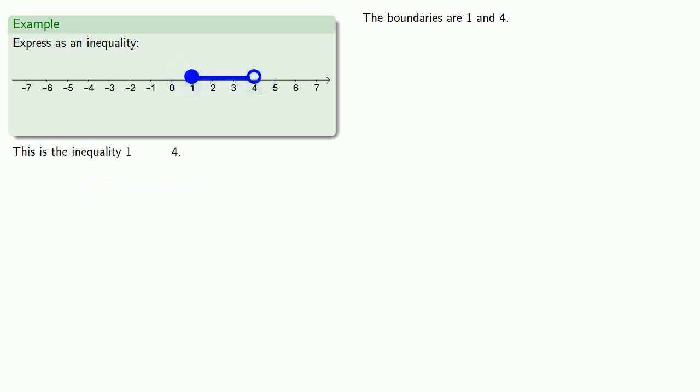Since there's a closed circle at 1, we include 1 in our inequality. Now we don't want to commit ourselves yet as to whether this is a greater than or equal to or a less than or equal to, but we do know there's an equal to. So we'll put in that little underscore. Meanwhile, since there's an open circle at 4, we exclude 4 from our inequality. So 4 is just going to have a greater than or a less than with it.